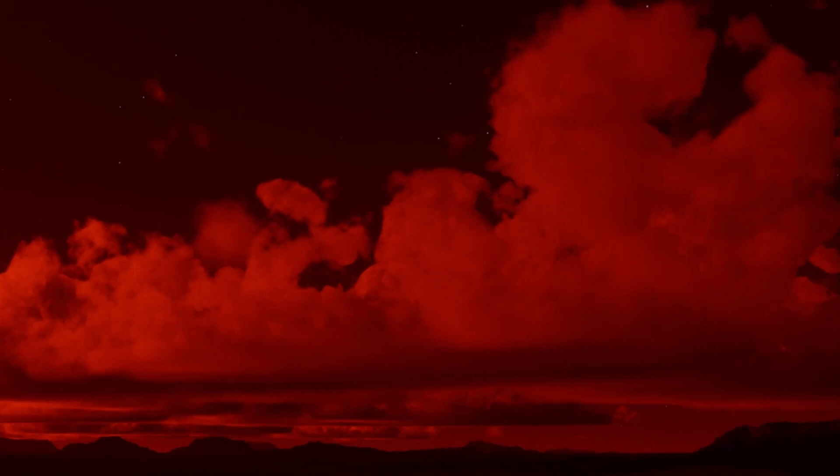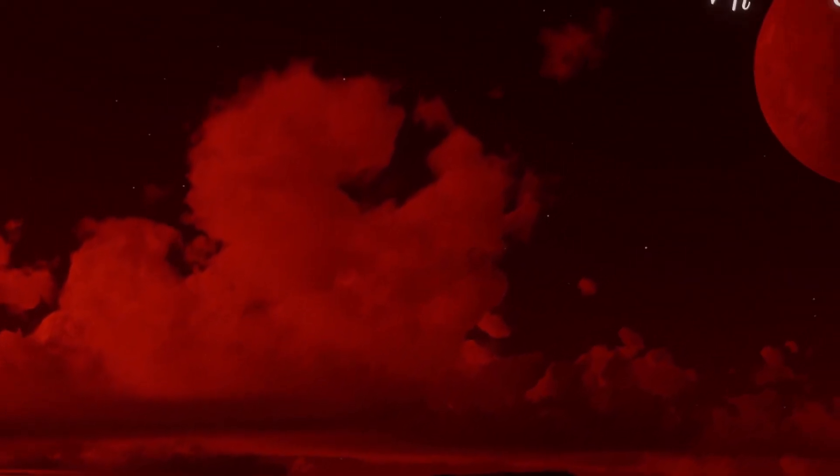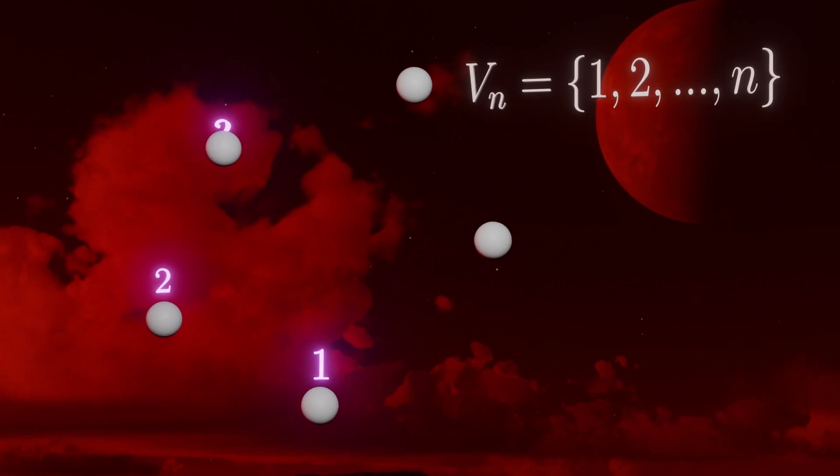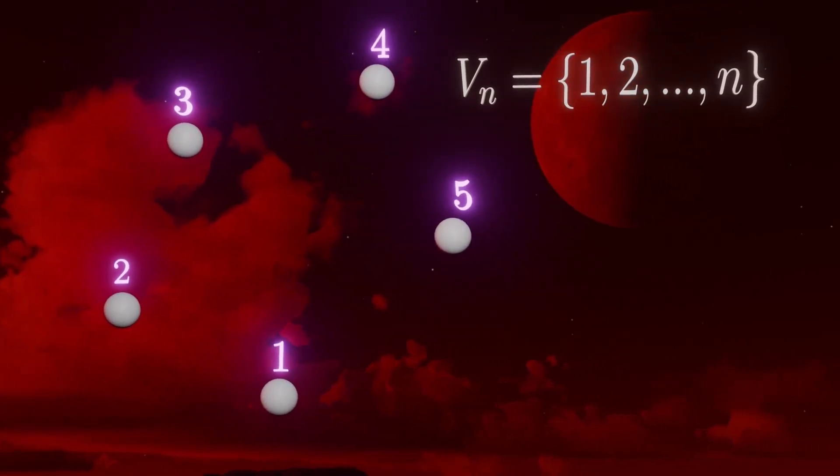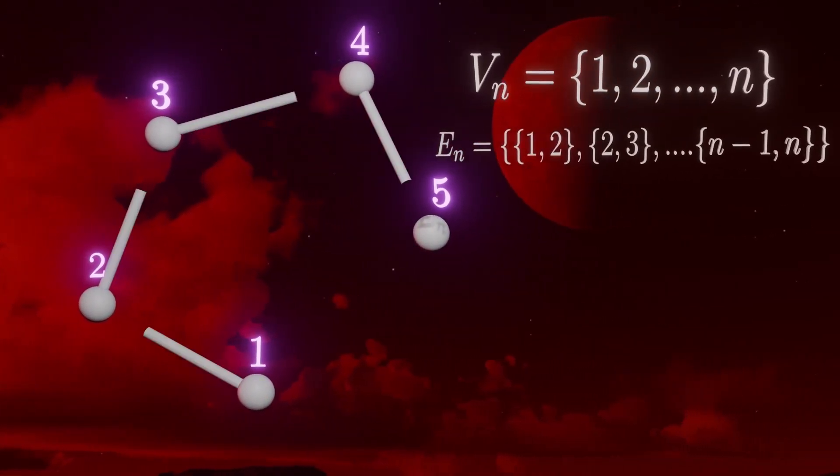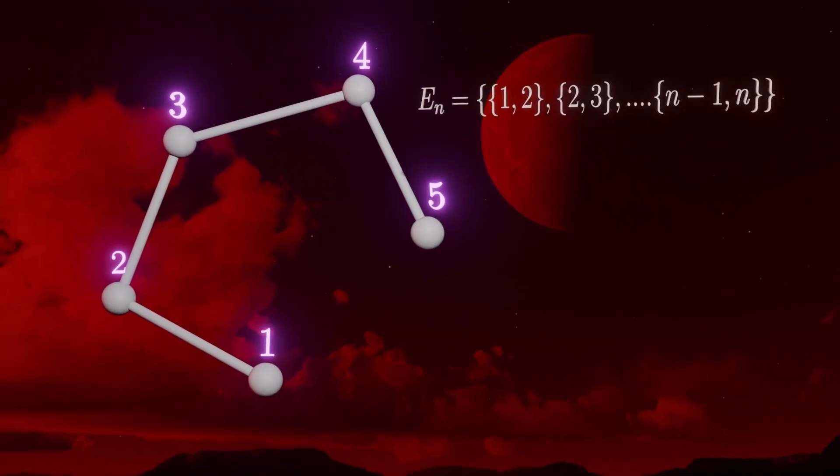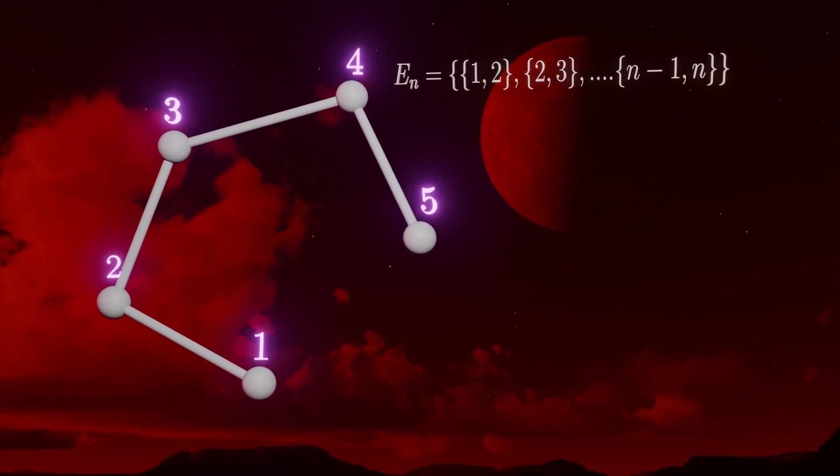Like paths, cycles are also very intuitive, and their definition is very similar. An n cycle is a graph on n vertices, and these vertices can be ordered 1, 2, 3, up to n, such that the edges are the sets of consecutive pairs of vertices, like in a path. But the difference is now, however, is that there's a wrap around, and node n is joined to node 1.